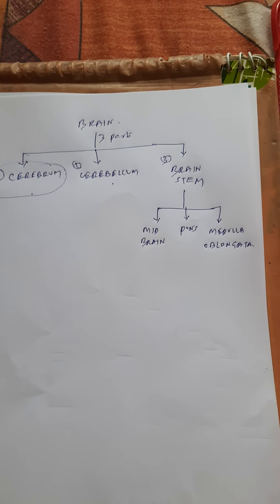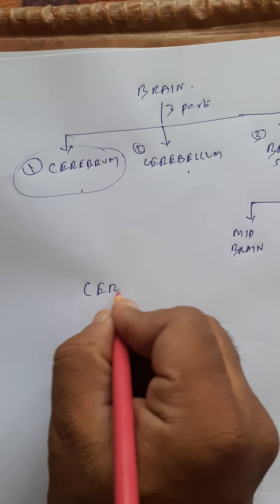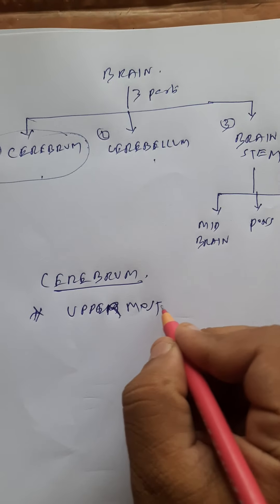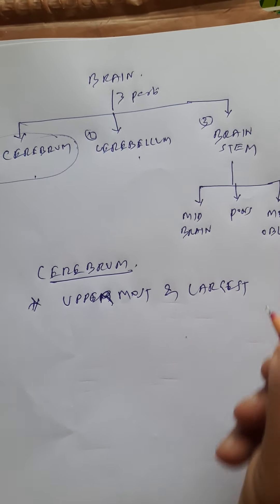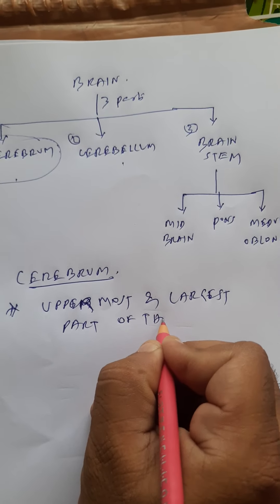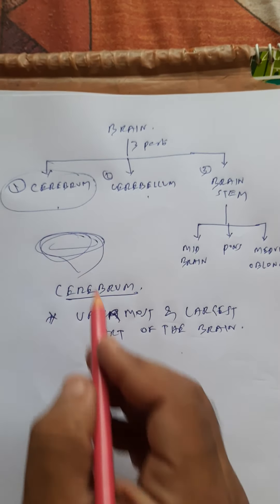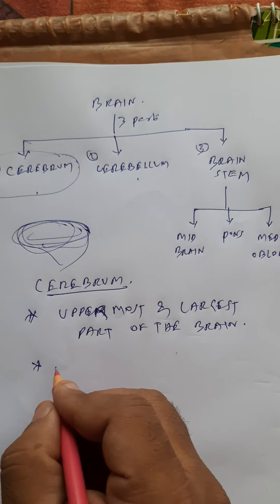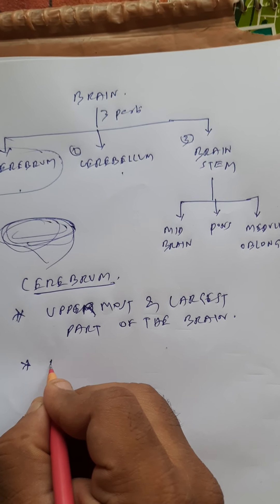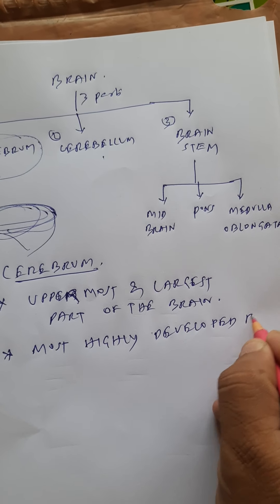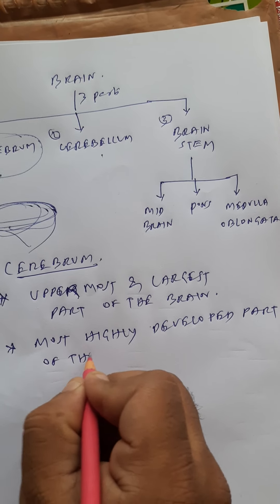What is cerebrum? Cerebrum is the uppermost and largest part of the brain. It is also the most highly developed part of the brain.